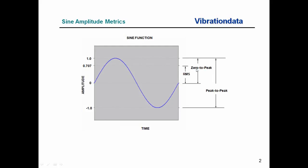Other times we use the zero-to-peak amplitude metric, or in some cases — particularly for displacement — the peak-to-peak amplitude metric. It doesn't matter so much which of these three we use, but the important point is that when conveying this information to another engineer, both parties need to understand the convention. The zero-to-peak amplitude is sometimes called the single amplitude, and the peak-to-peak amplitude is called the double amplitude.